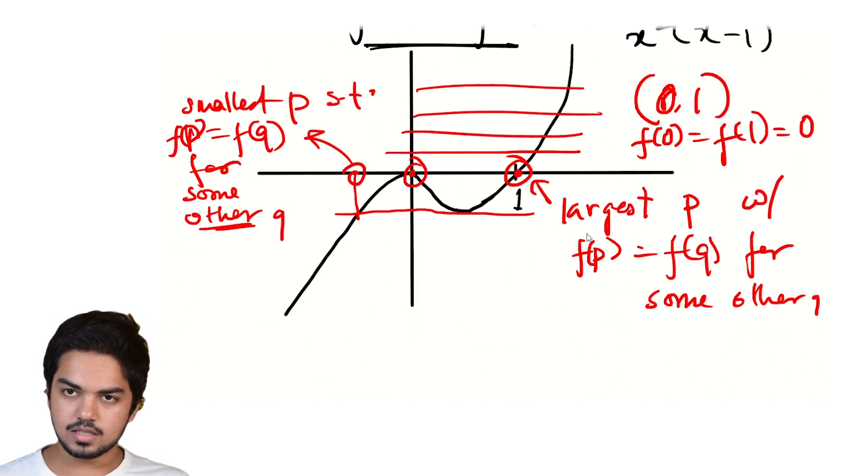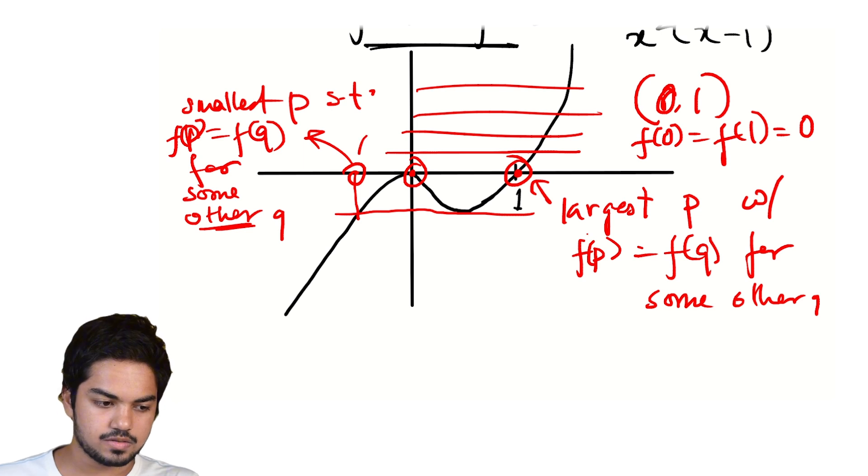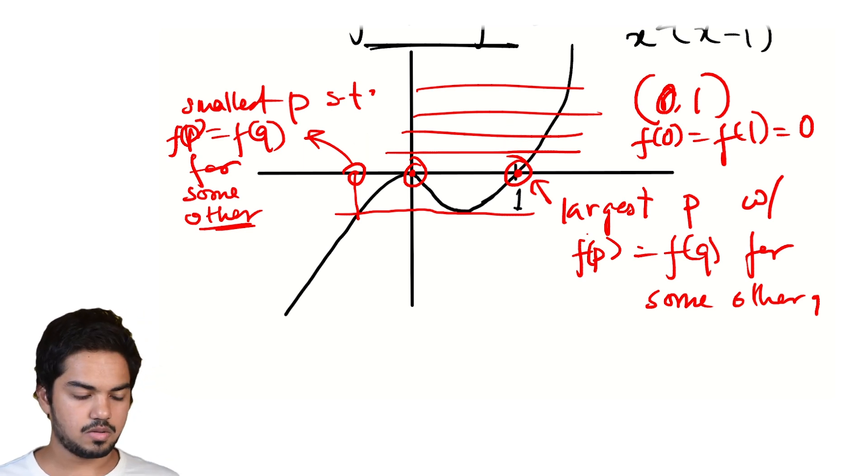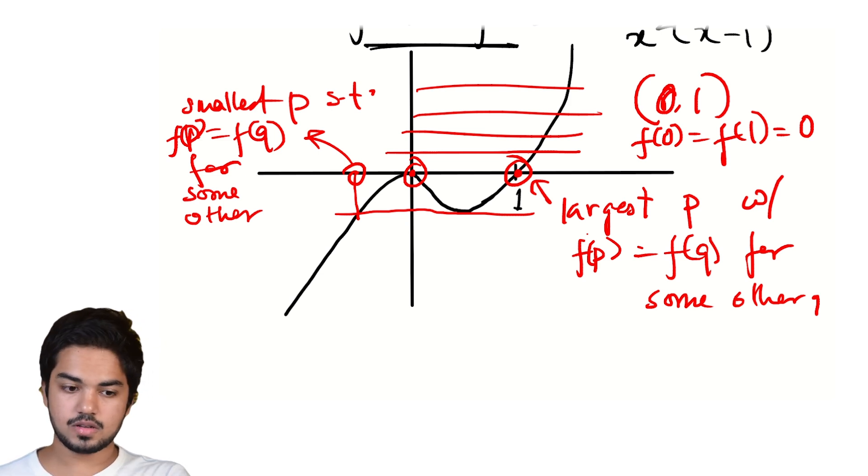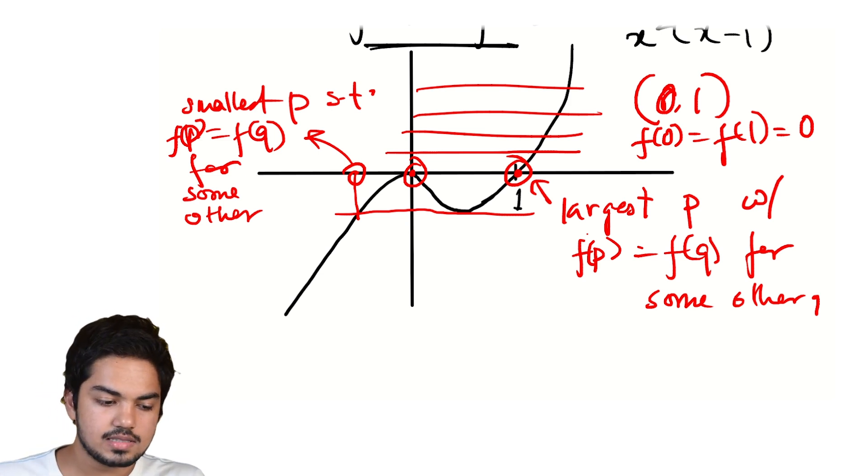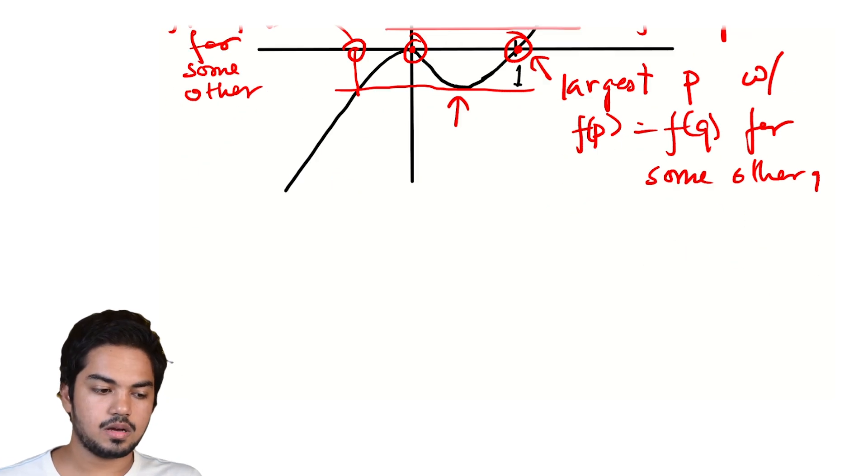This is the smallest P such that f(P) = f(Q) for some other Q. Other is the important part, right? A good pair has to be distinct. So the concern that we have is between these values of X. I will clean up the board a bit.